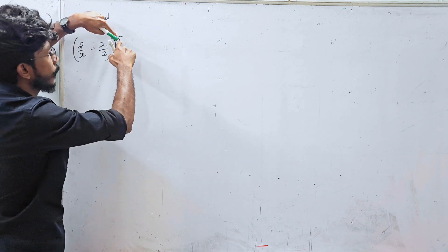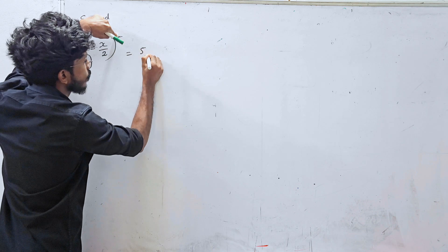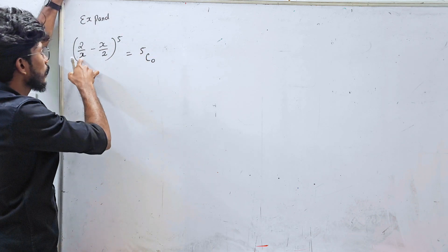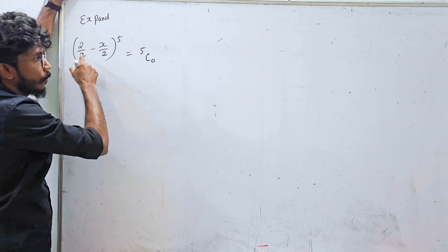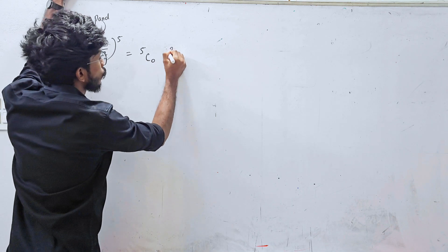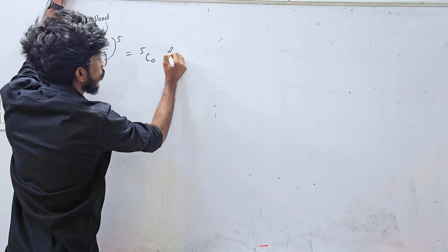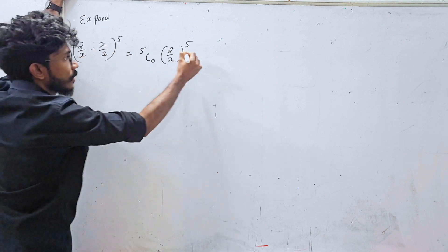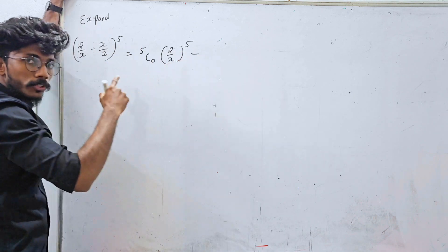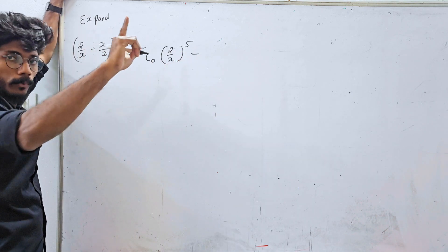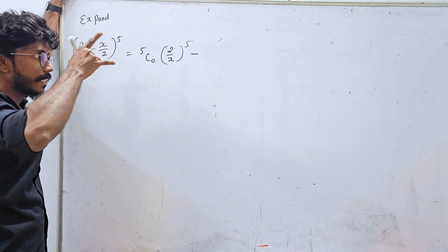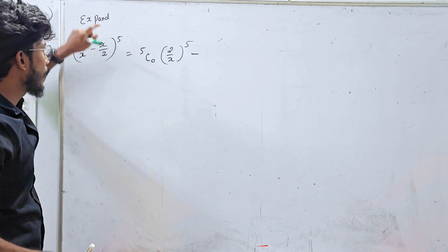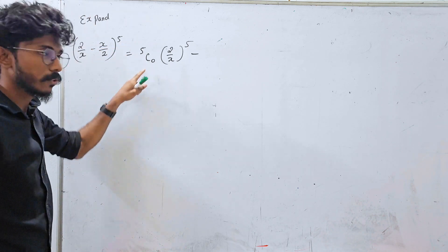The power is 5, so we have 5C0. The expression is 2 by x minus x by 2, the whole raised to 5. Note the sign pattern: negative is negative, positive is positive, negative is positive — the signs are alternative.